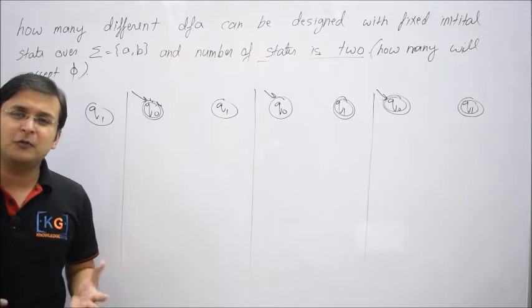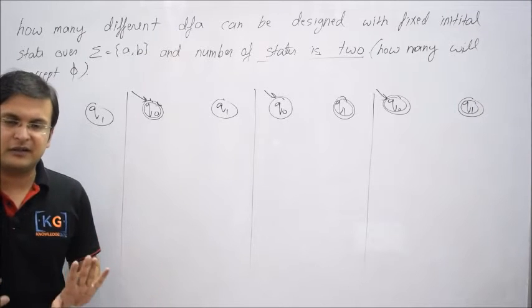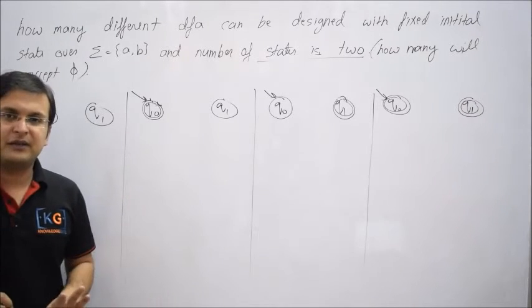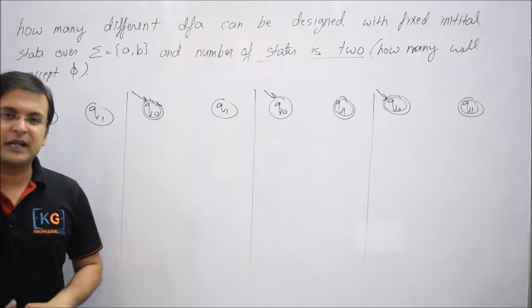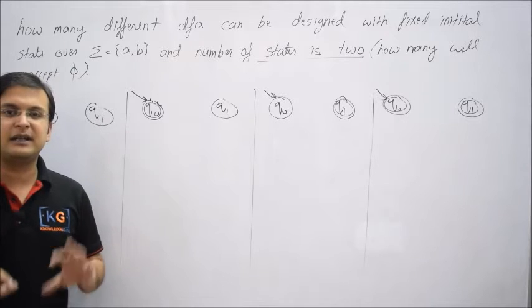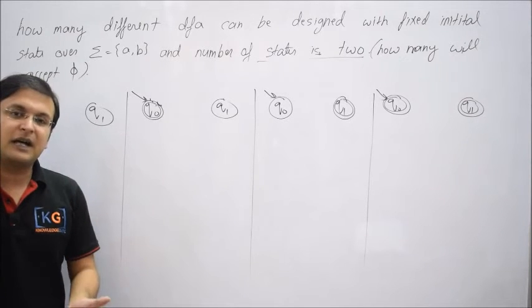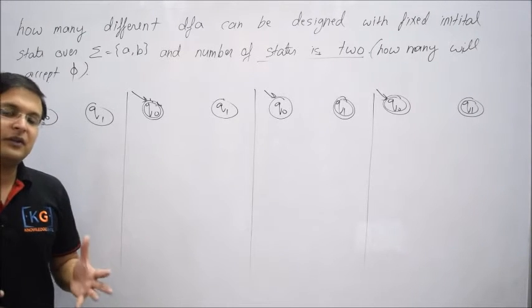One more thing: some students might be thinking why would you want to design a DFA which doesn't accept anything? Actually that is not the case. Certainly we don't want to do so, but mathematically they are also a valid case because if a language is empty then it is also a regular language, and if a language is regular then there must exist a DFA to accept it.